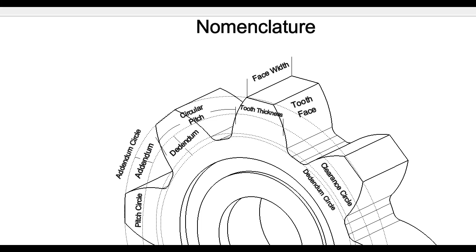Tooth face, the mating surface of the gear tooth between the addendum circle and the pitch circle. Tooth flank, the mating surface of the gear tooth measured between the pitch circle and the base circle. Backlash, amount of clearance between the mated gear teeth.